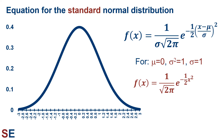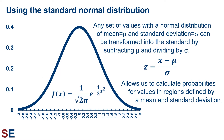The standard normal distribution is centered around 0, and by the time it gets to negative 2 and positive 2, the individual probability values are quite small. Keep in mind, we generally care much less about individual probability values and much more about the area underneath the curve for certain regions along the x-axis. The standard normal distribution is useful because any normally distributed dataset with mean mu and standard deviation sigma can be transformed into the standard normal by subtracting mu from every value and dividing by sigma. This transforms the original x values into z values. Doing this transformation allows us to calculate probabilities for values in regions defined by mean and standard deviation.